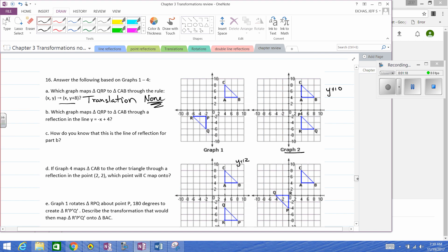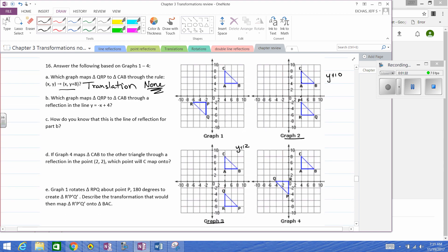Which graph is y equals negative x plus four? Negative x plus four. All right, so Q has to map to C. I was wrong about this being a rotation, because if Q maps to C and P maps to B, okay, the orientation switched.